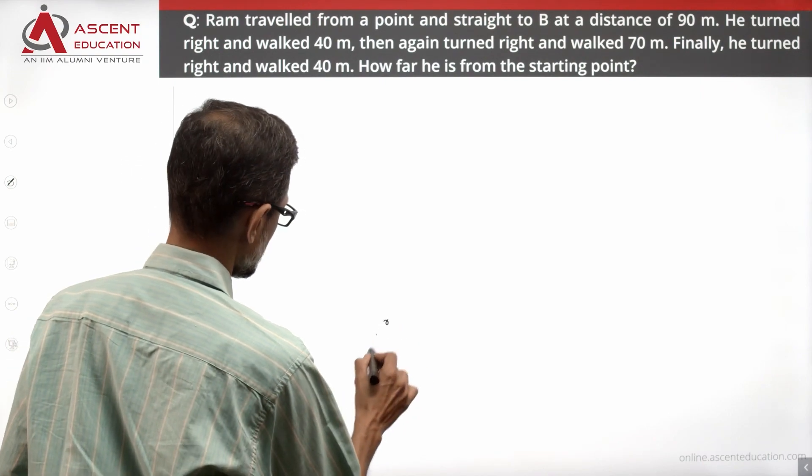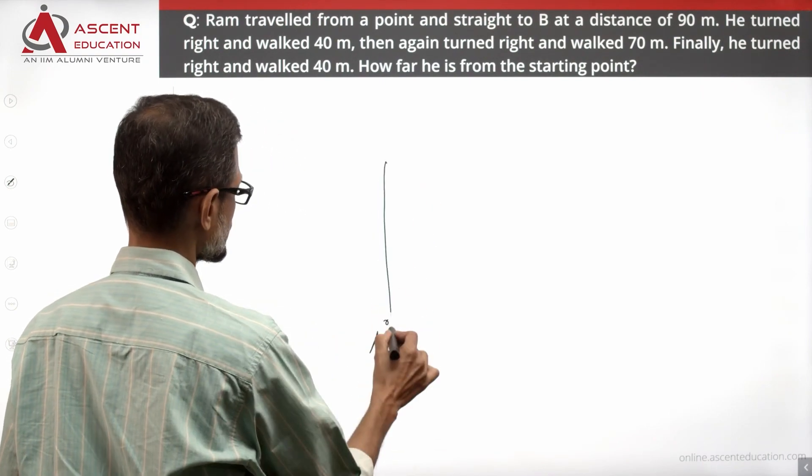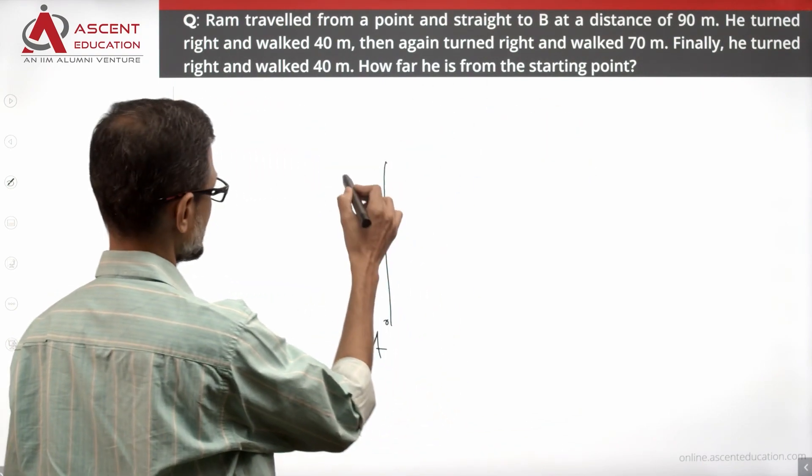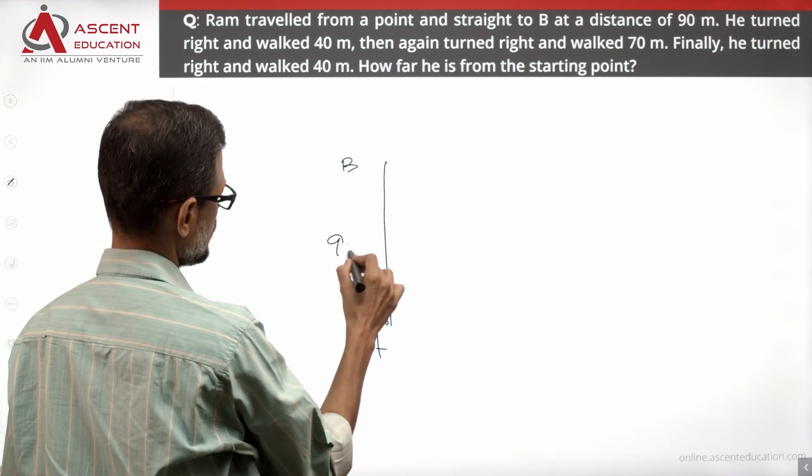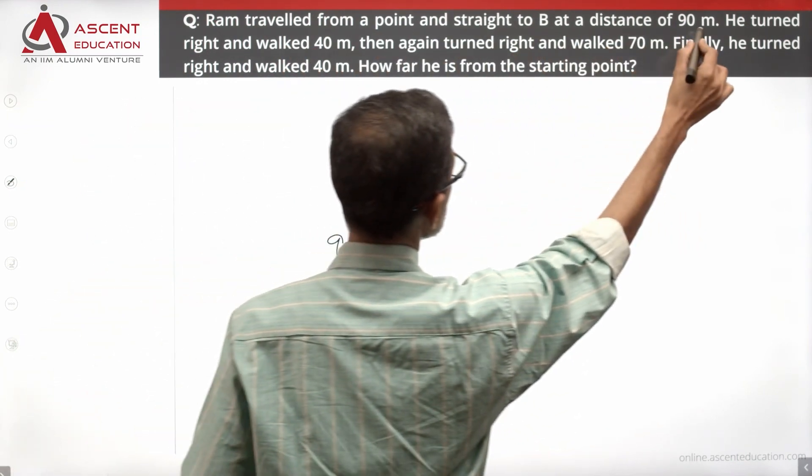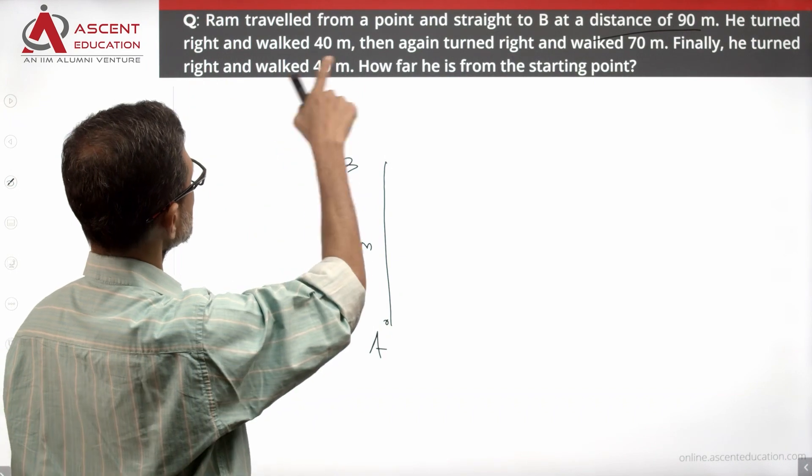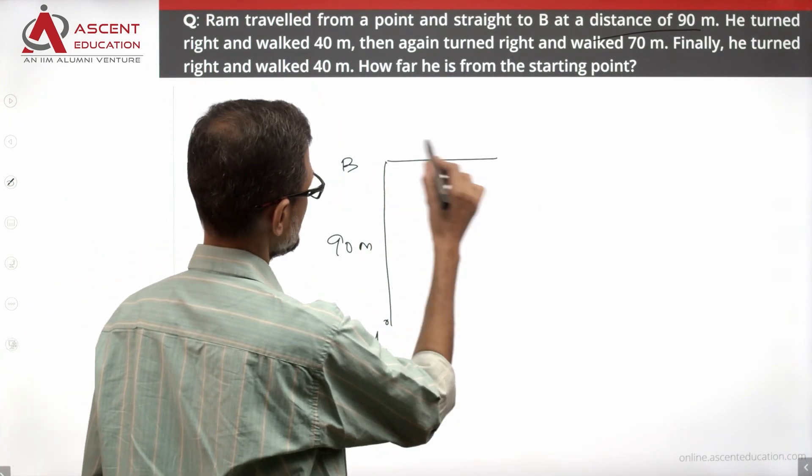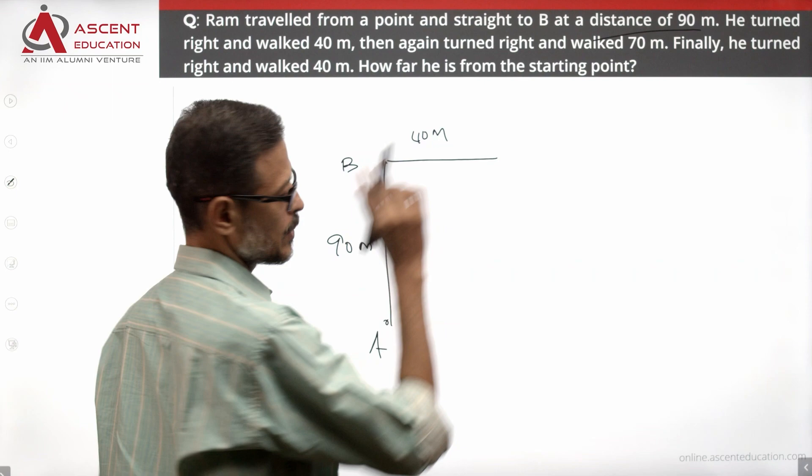So he is traveling 90 meters straight to B, so this is equal to 90 meters. Then he turned right and walked 40 meters. So here he is turning right and walking.